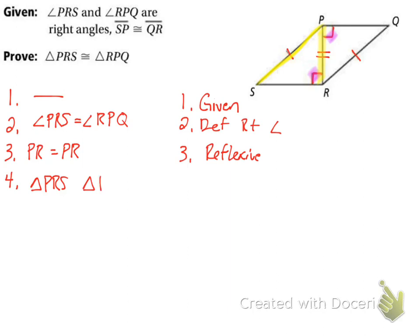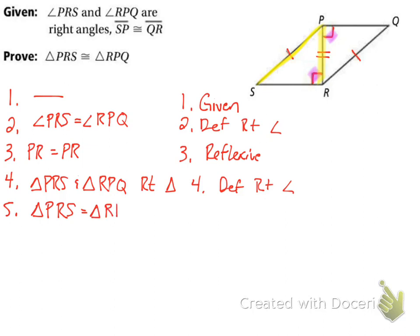We state that triangle PRS and triangle RPQ are both right triangles by definition of right angle, then conclude triangle PRS is congruent to triangle RPQ by hypotenuse leg. Looking at the picture, the hypotenuse and PR as the leg confirm this. They are both right triangles because those two angles were given as right angles.